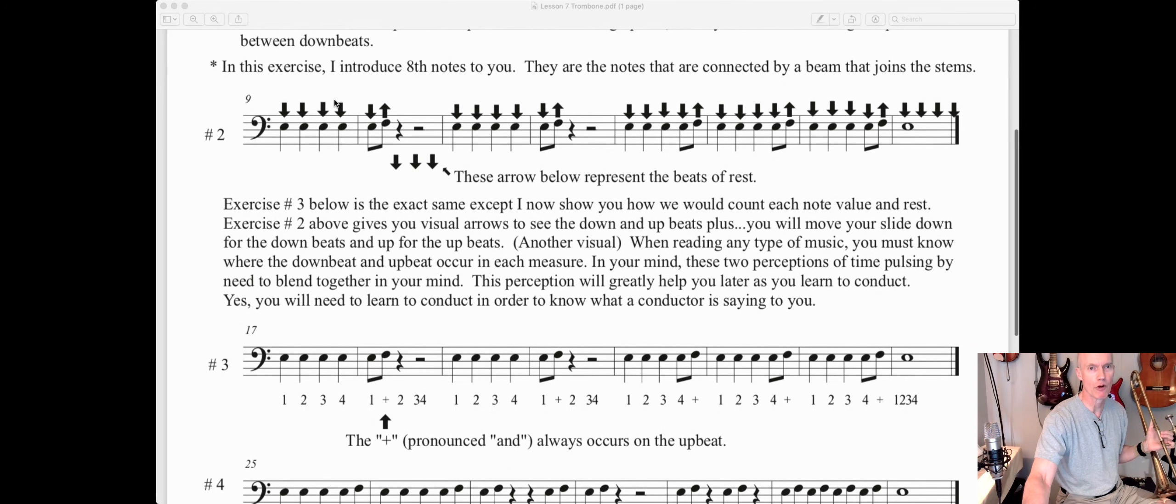All right, that's exercise number one. Now number two, we start off with quarter notes on these downbeats, and that's what these arrows represent. But right here you have two little eighth notes that take place in the same time that a quarter note would take place. We basically cut the beat in half.